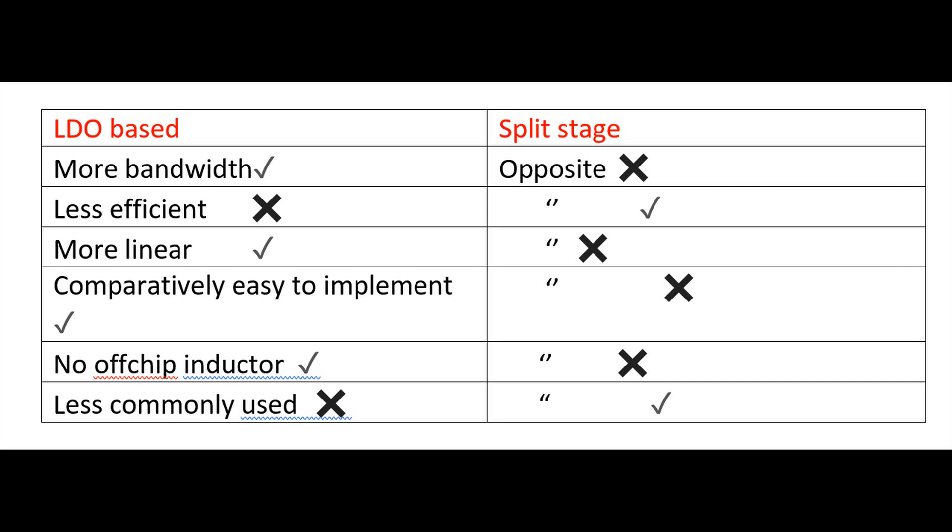The problem with LDO based tracker is less efficient and the split stage is efficient. LDO based tracker is more linear and the split stage is more nonlinear.